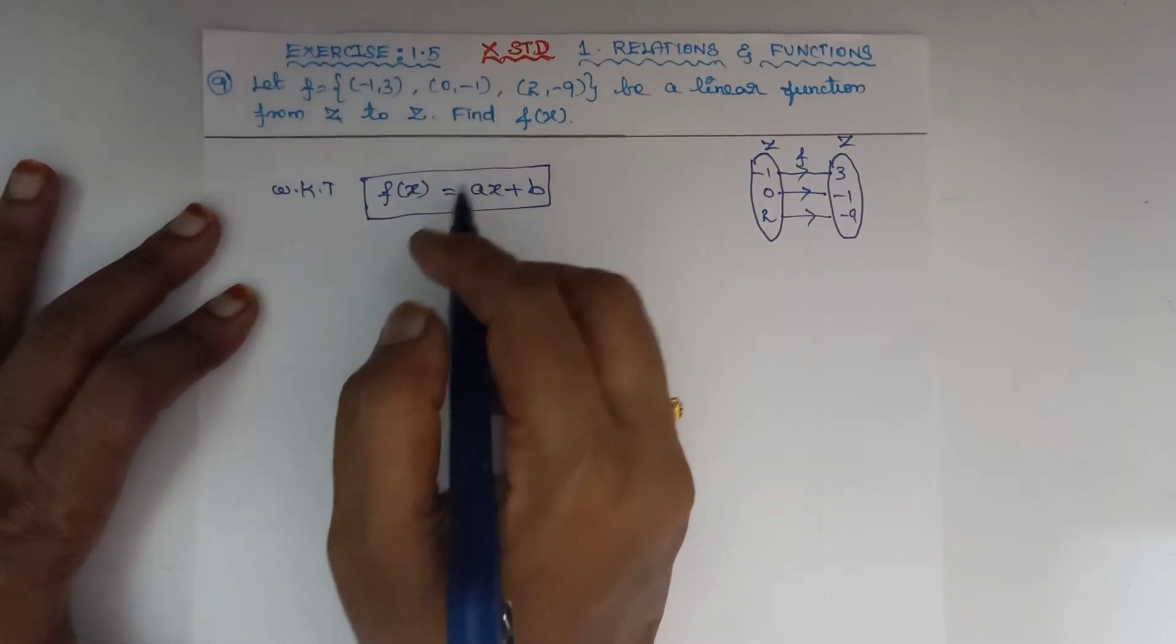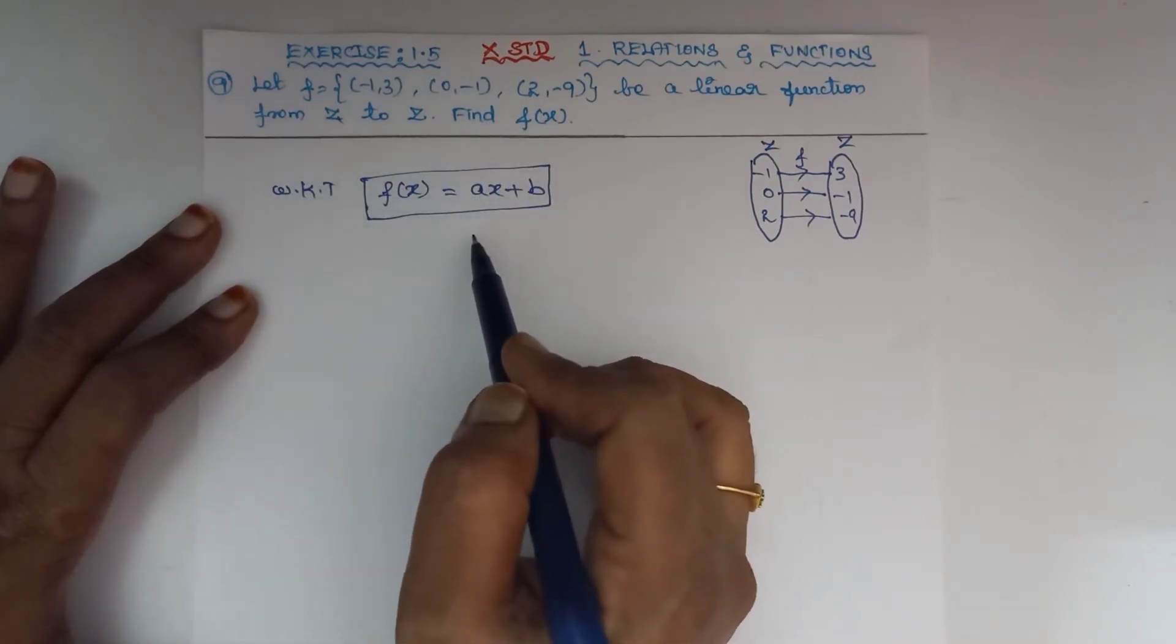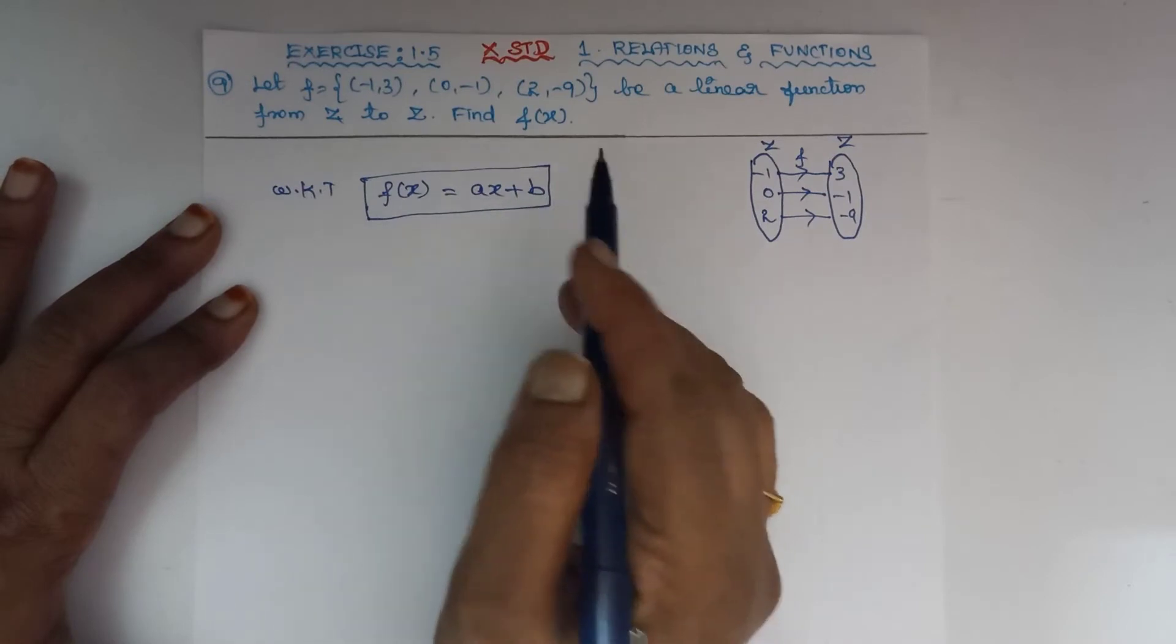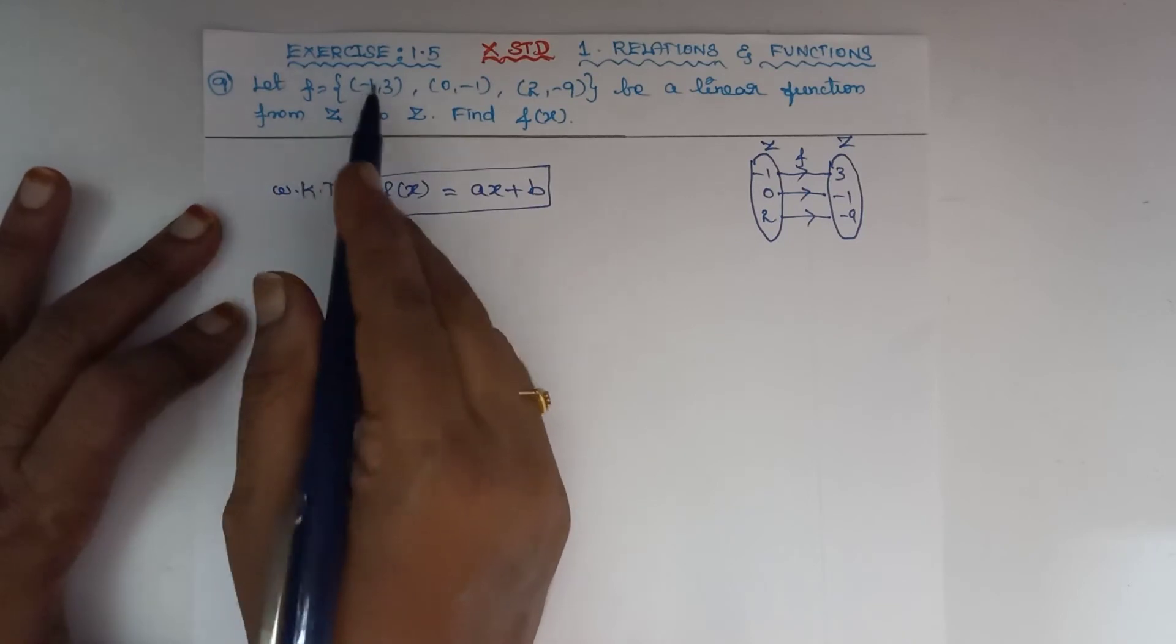To find the values of a and b in the function f(x), we need to find the value of f(x). First, we'll take the first pair.